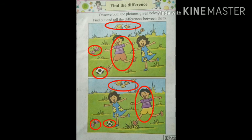Now, observe the picture again and see the difference. Yes, I got the difference. In the first picture, the boy's pant color is brown, and in the second picture the boy's pant color is yellow. Let's circle the boy's pants. Have you done? Very good.